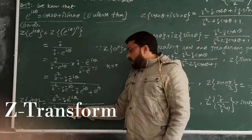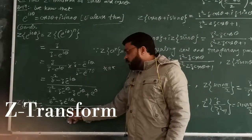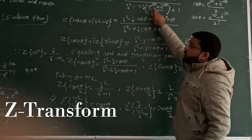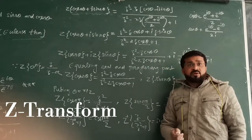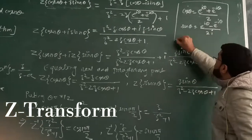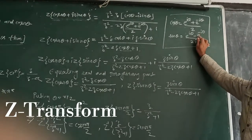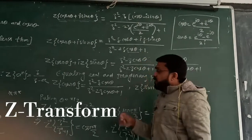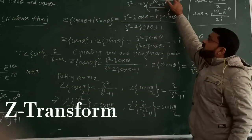I will use e raised to the power minus i·n·θ plus e raised to the power i·n·θ. If I divide by 2 and multiply by 2, it will be cos(nθ). The relation is: e raised to the power i·n·θ plus e raised to the power minus i·n·θ upon 2 equals cos(θ). And sin(θ) is e raised to the power i·θ minus e raised to the power minus i·θ by 2i. I have written e raised to the power minus i·θ using Euler's theorem as cos(θ) minus i·sin(θ).